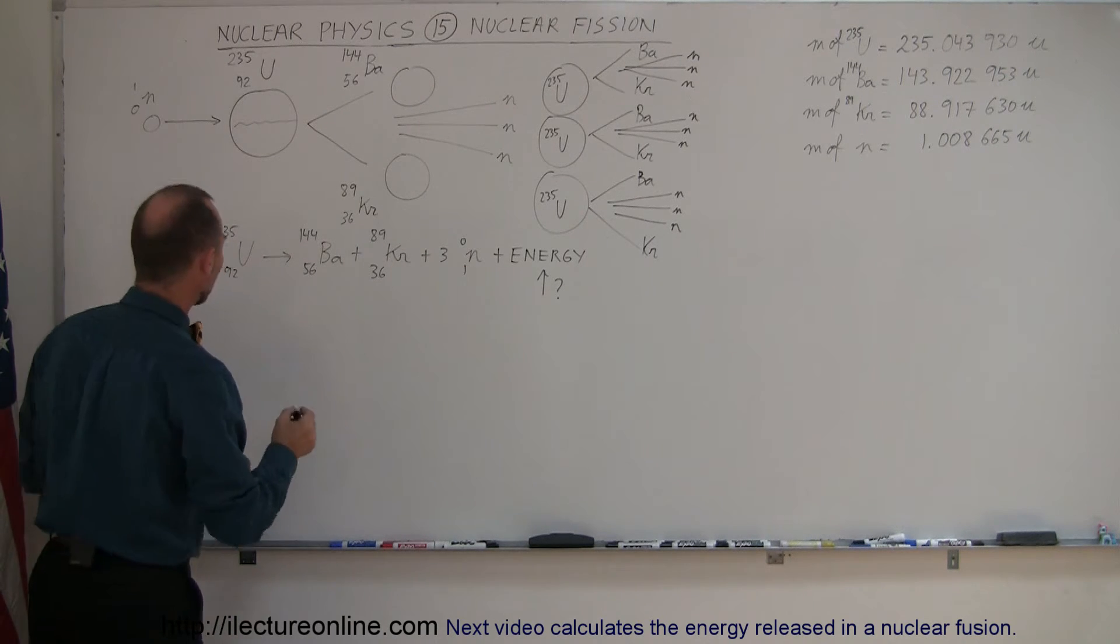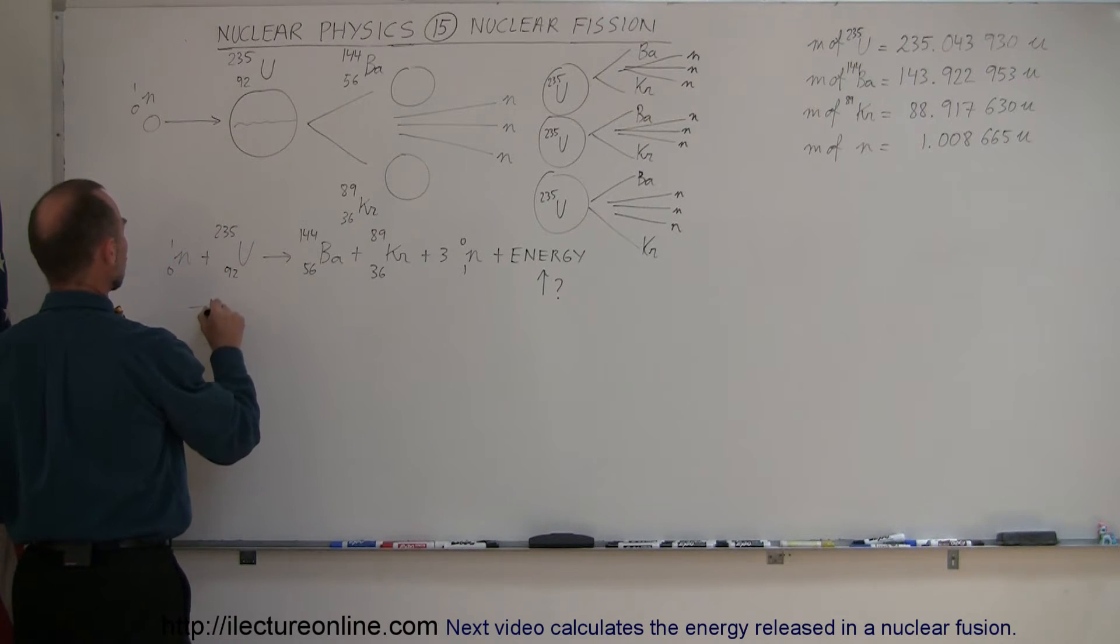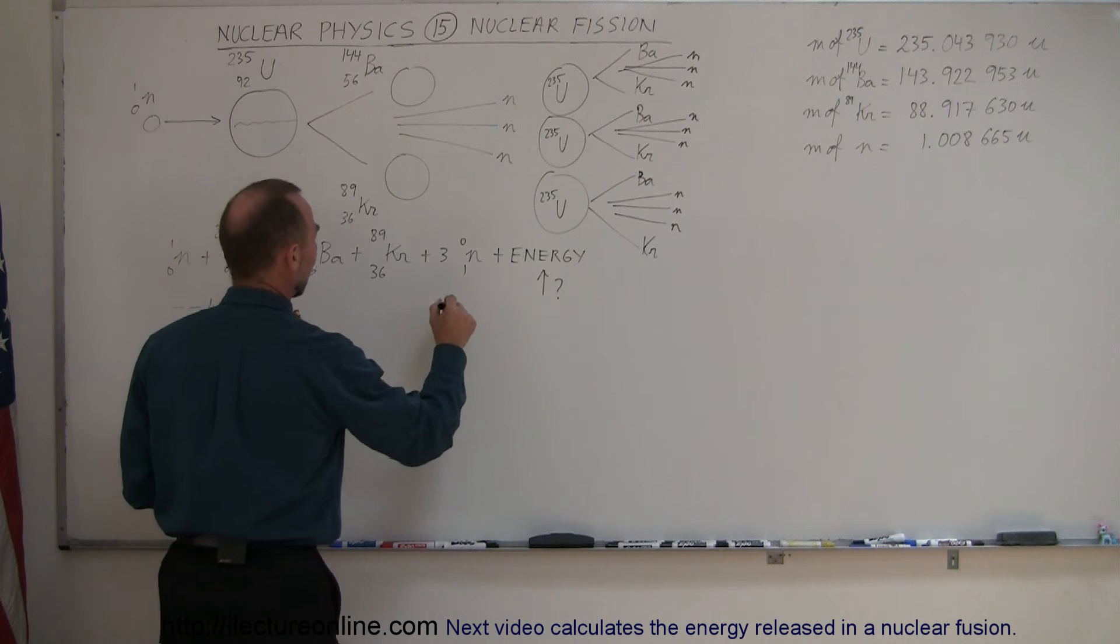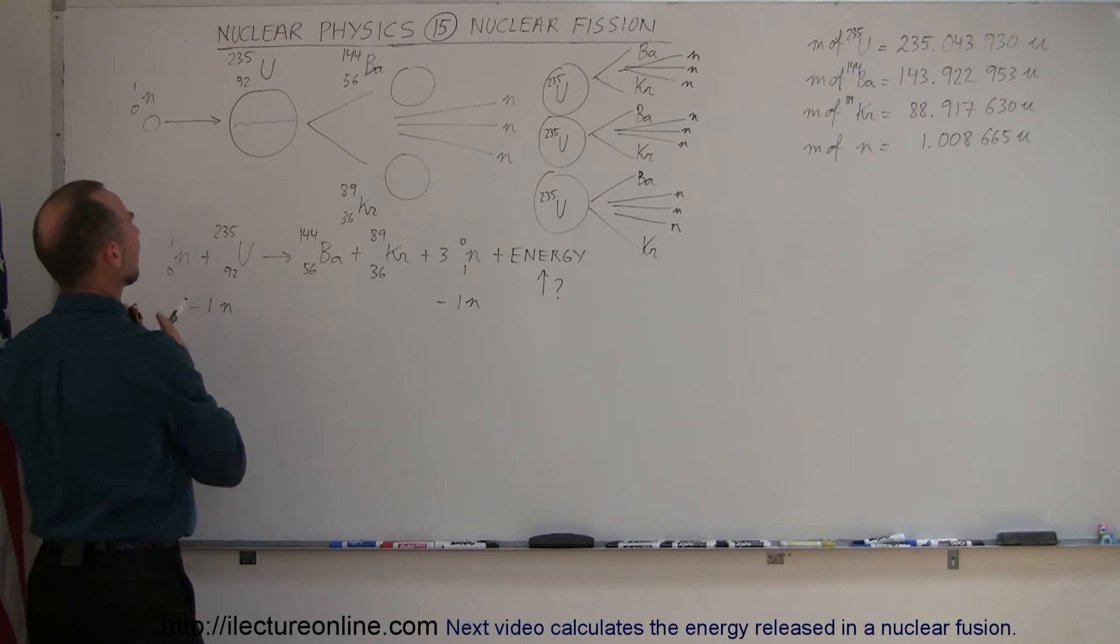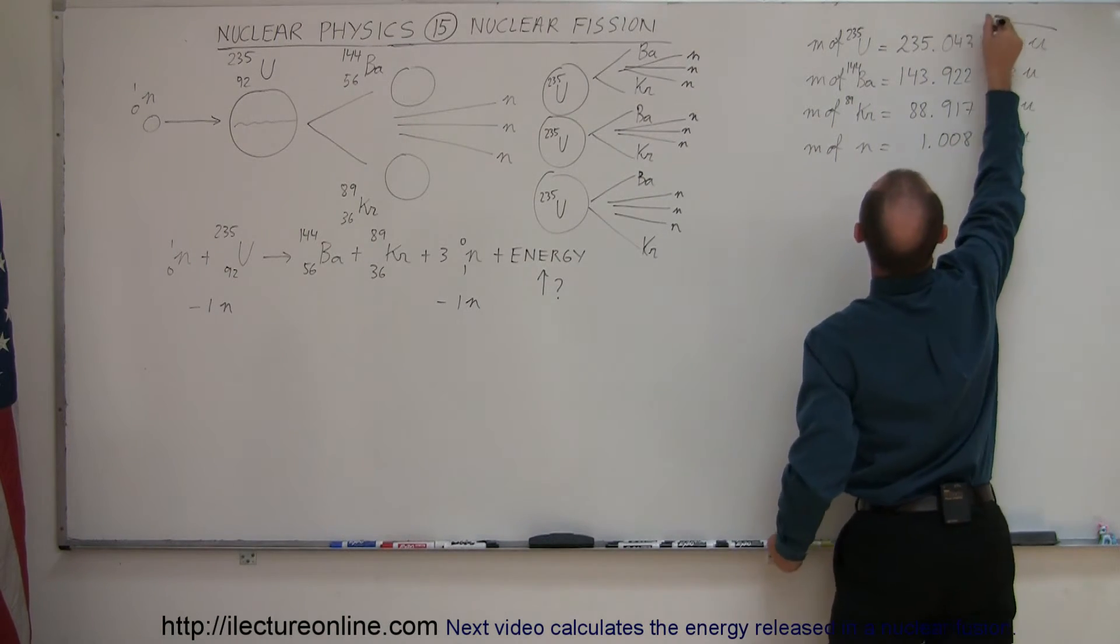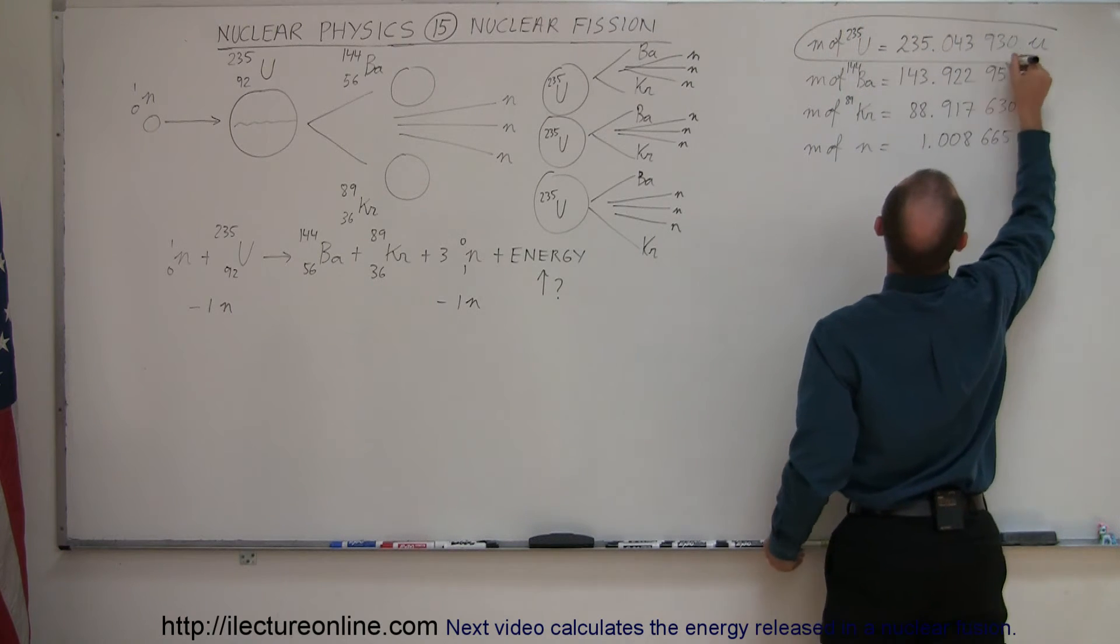Now, to make it maybe a little bit simpler, how about if we subtract one neutron from the left side and subtract one neutron from the right side so we don't have to worry about adding anything to the left side. We just simply take the mass of the uranium nucleus and say that is the mass of the left side of the equation.